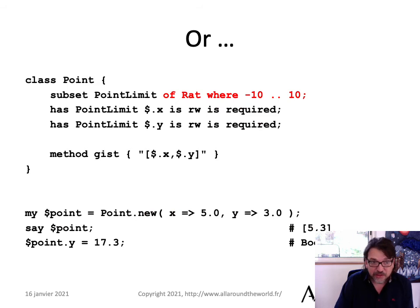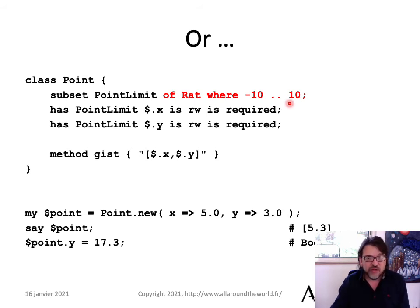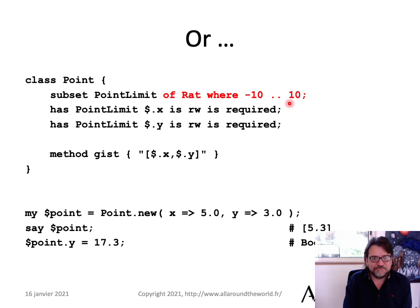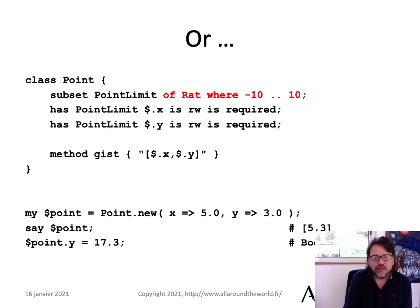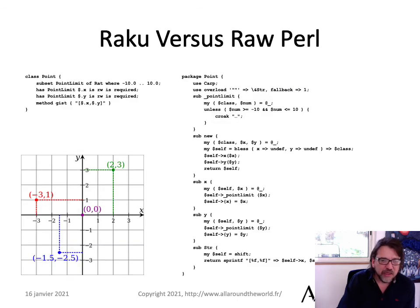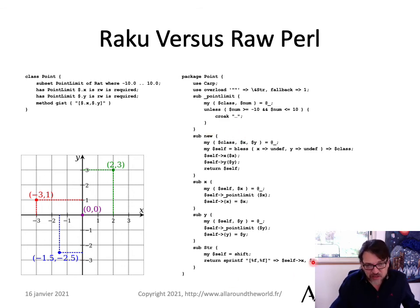I can now create a `PointLimit` type of Rat where the range is `-10..10` — that's the range operator. This makes it even simpler to create my object, with the syntactic sugar we want over and over for common things we do all the time. You'll notice there's no code saying 'if this do that' — this is entirely declarative. How would this look in raw Perl? You've got all this ugly boilerplate to mimic this behavior. And because you have to write all that extra code, you're going to have more bugs — the more code you write, the more bugs you have. That's why I love the declarative nature of Raku.